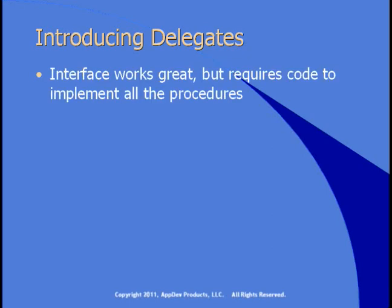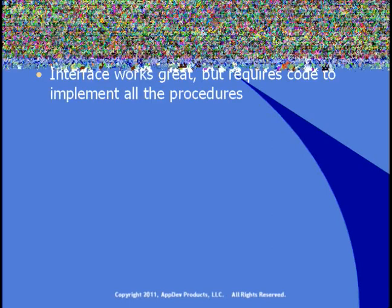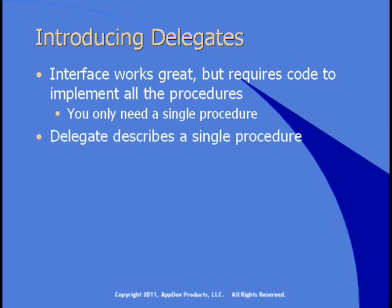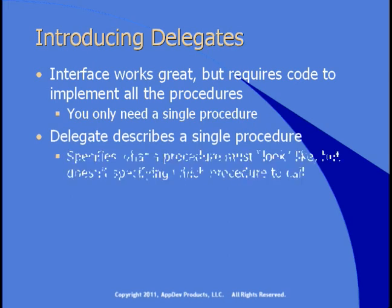That interface thing we tried works great, but the problem is it requires you to provide code to implement all the procedures, and an interface might have multiple procedures like that other proc you don't care about thing. What if you only need a single procedure? What do you do? This is the answer. A delegate is a type that describes a single procedure — it specifies what a procedure must look like, just like an interface does.